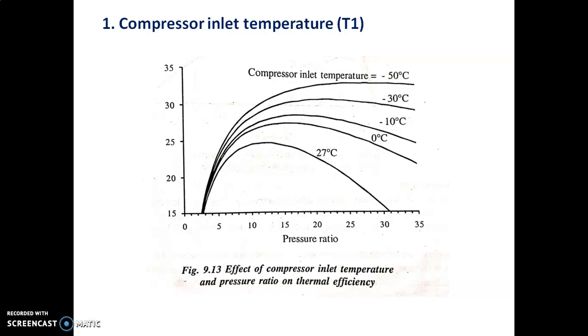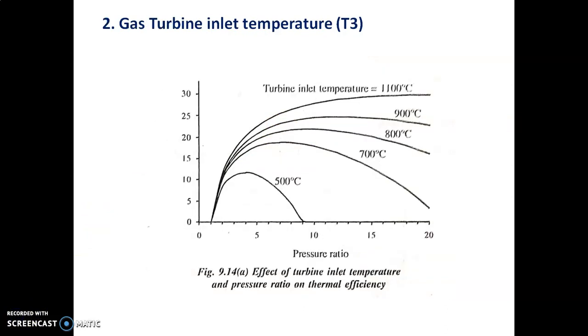So in short, when compressor inlet temperature T1 increases, work output decreases and thermal efficiency decreases. T3 is not affected by T1. From the diagram, as inlet temperature increases, thermal efficiency decreases.